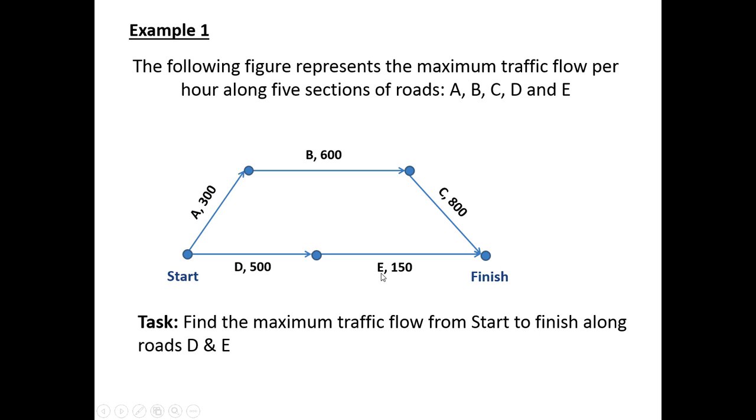Once it hits section E it's restricted to 150. We're going to have one heck of a buildup in terms of backlog of traffic with a traffic jam. So this minimum value from D to E of 150 is in fact our restricting or maximum traffic flow from sections D to E.